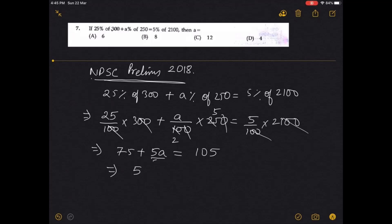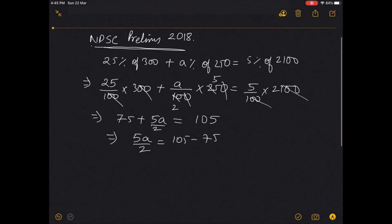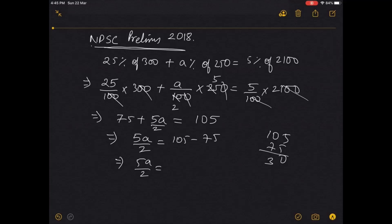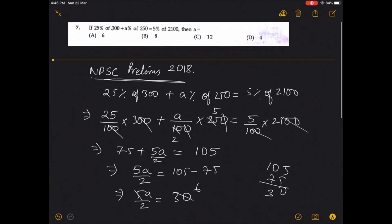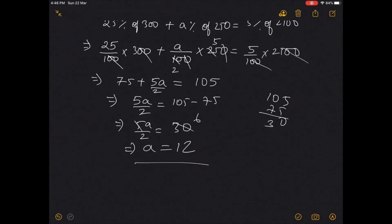So 5A by 2 equals 105 minus 75, which is 30. Therefore 5A equals 60, giving A equals 12. Option C, that is the correct answer.